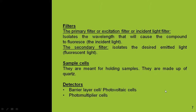Sample cells are used for holding the samples and are generally made of quartz. They are cylindrical in shape. For detectors, barrier layer cells or photovoltaic cells and photomultiplier cells are generally used.